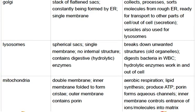The Golgi body collects, processes, and sorts molecules from the rough ER ready for transport to other parts of the cell or out of the cell through secretion vesicles; it is also used for producing lysosomes. Lysosomes break down unwanted structures such as old organelles and digest bacteria in white blood cells; their hydrolytic enzymes work both inside and outside the cell. The mitochondria are used for aerobic respiration and lipid synthesis; they produce ATP, which is the energy that cells need for other activities. The inner membrane controls exchange of ions or molecules into the matrix.